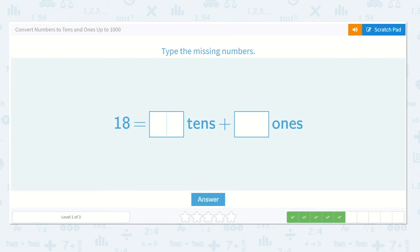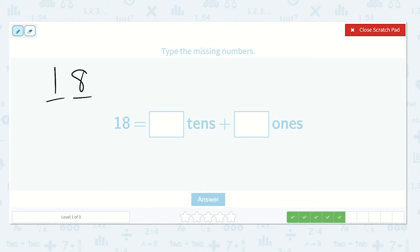Here we have 18. I can see that there's a one in the tens place and an eight in the ones place. So we have ten and eight more. So eighteen.